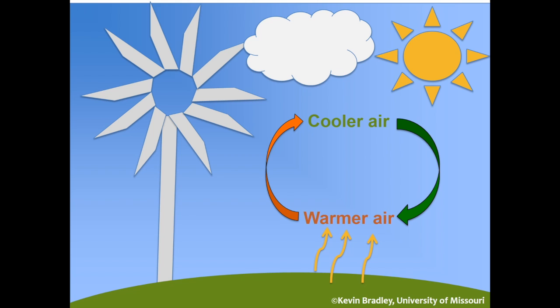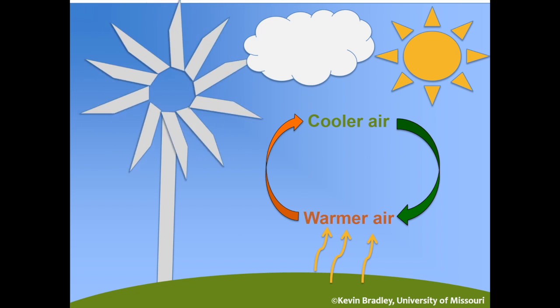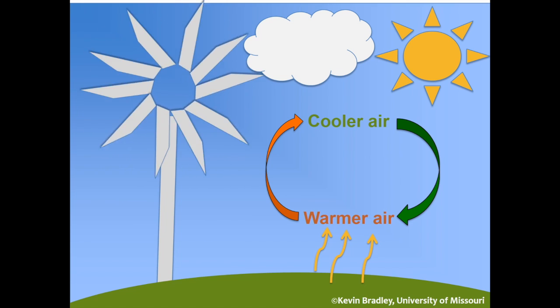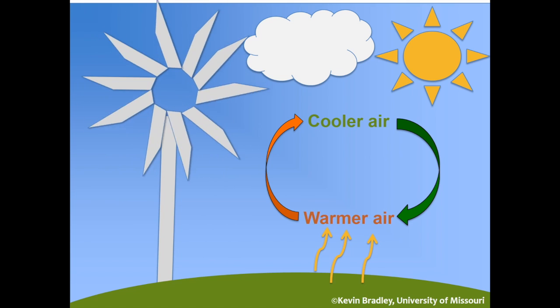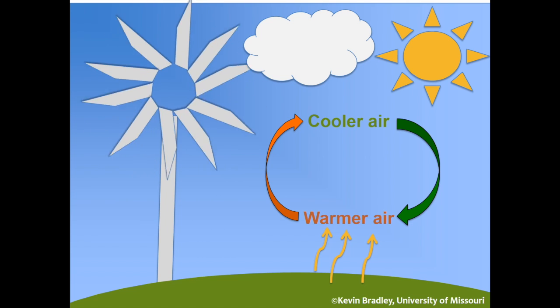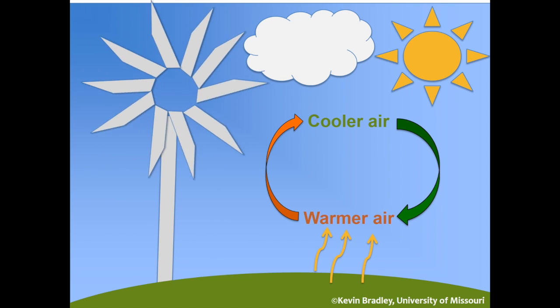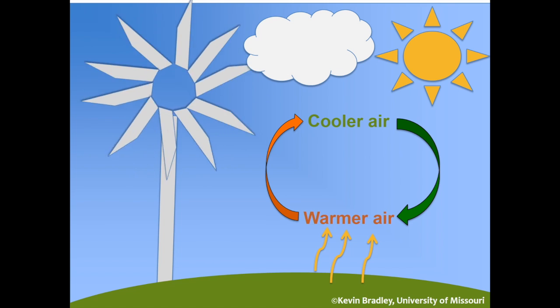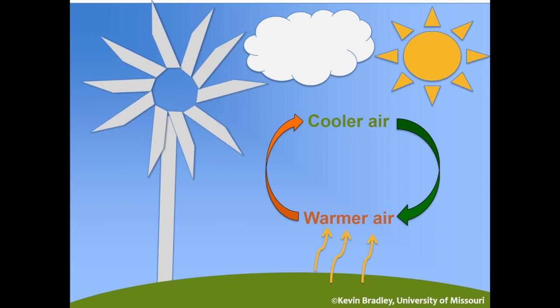This can usually be observed by wind, as the cool and warm air mix. Cumulus clouds usually sit atop these air mixing columns.